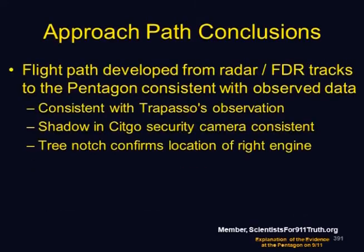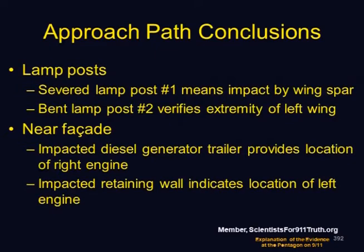The approach path conclusions: the flight path developed from radar and FDR tracks to the Pentagon is consistent with observed data — consistent with the Trapezio location at 1400 South Barton, the shadow in the Citgo security camera, and the tree notch confirming right engine rotation. The severed lamppost number one, broken in three parts, was impacted by a significant piece of the wing if not the right engine cowling. The bent lamppost number two verifies the extremity of the left wing. Near the facade, the impacted diesel generator trailer provides the right engine location, and the impacted retaining wall indicates the left engine location.